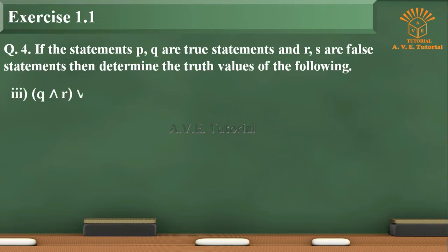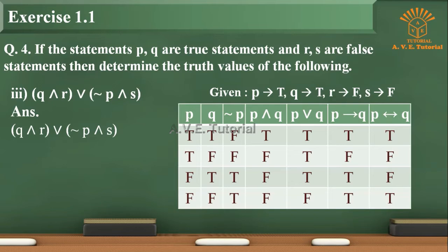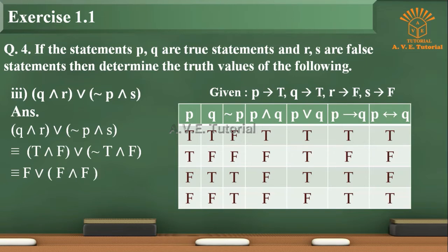Sub-question 3: Q and R or negation of P and S. Given that P is true, Q is true, R is false, S is false. This is equivalent to T and F or negation of T and F, which is equivalent to F. Answer: F.